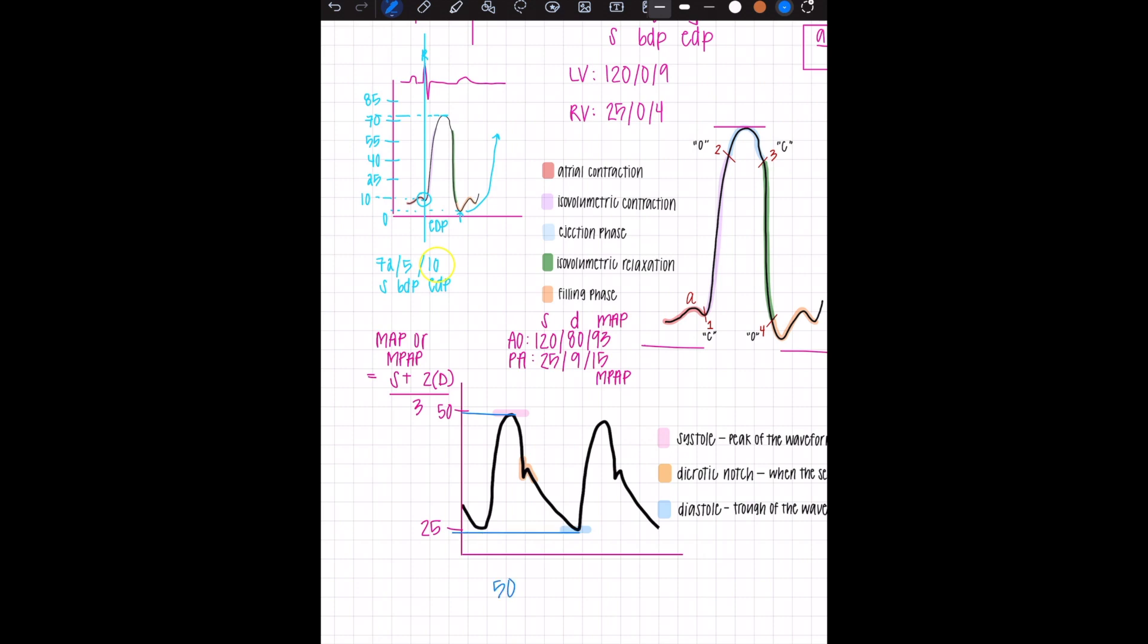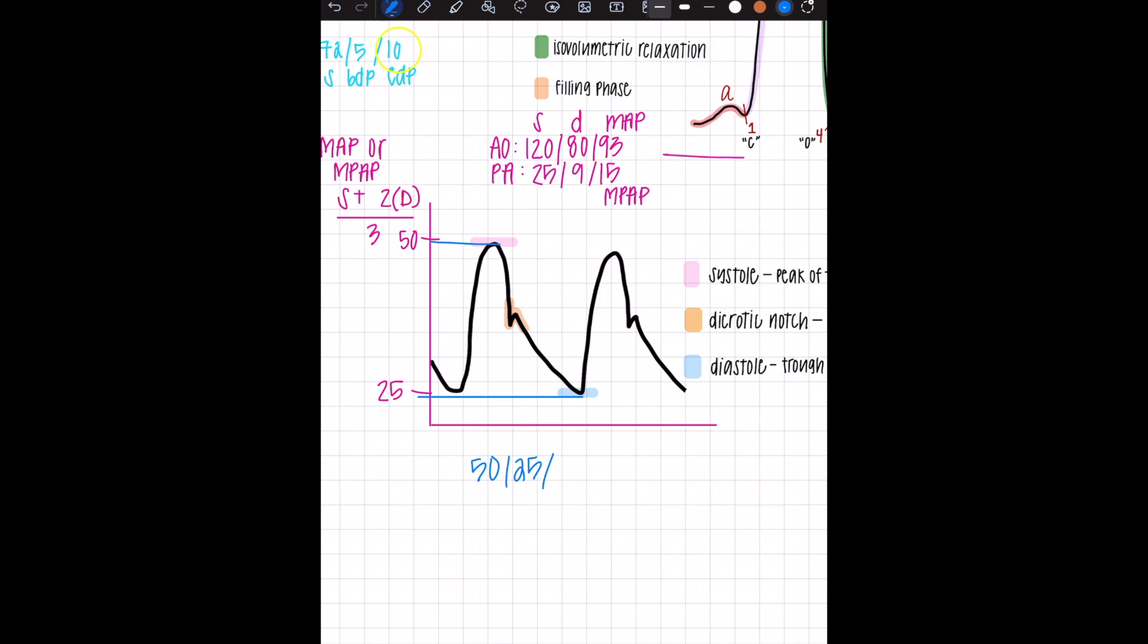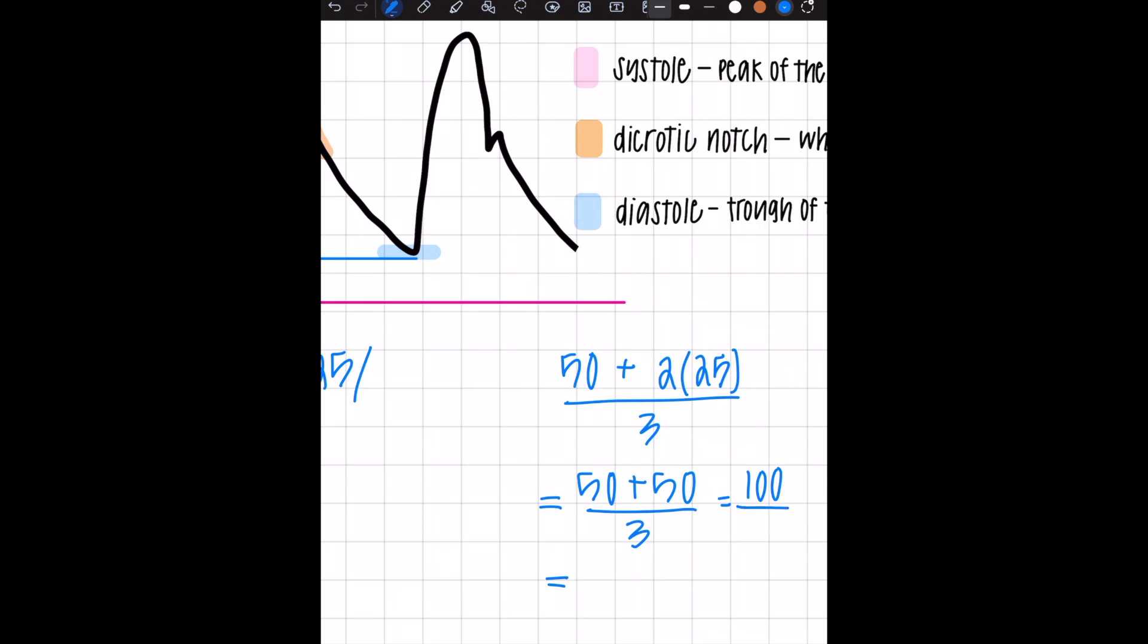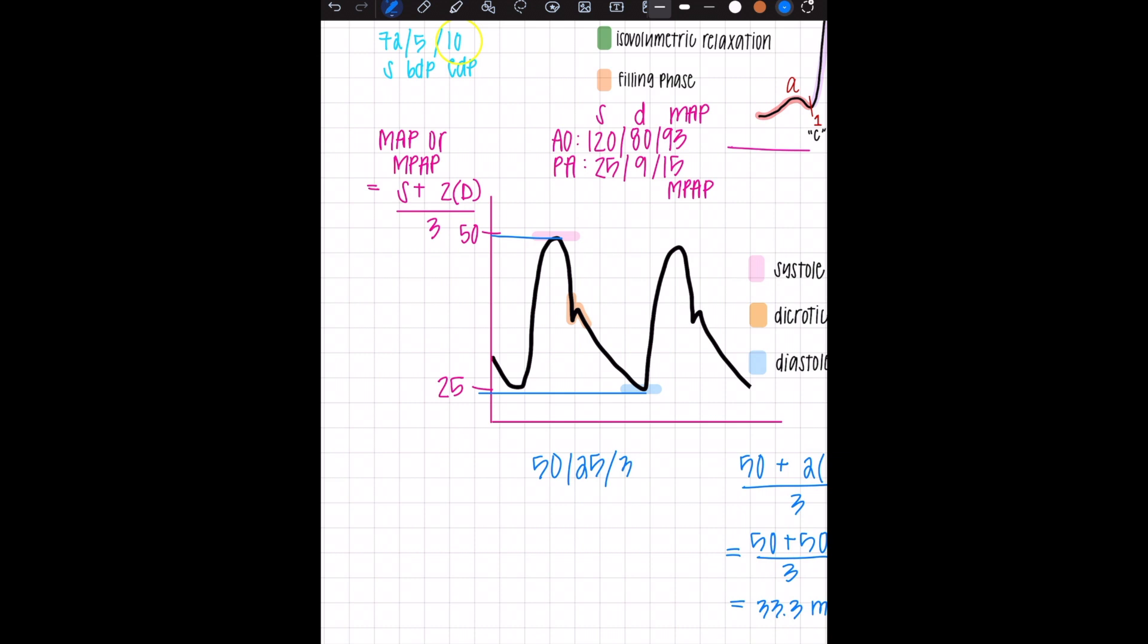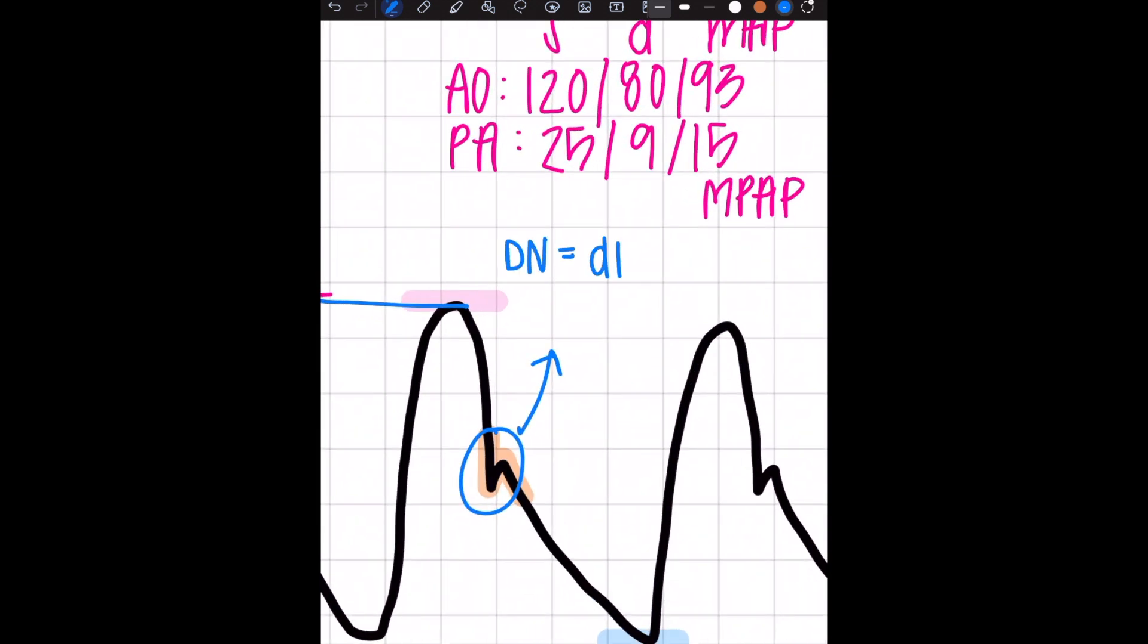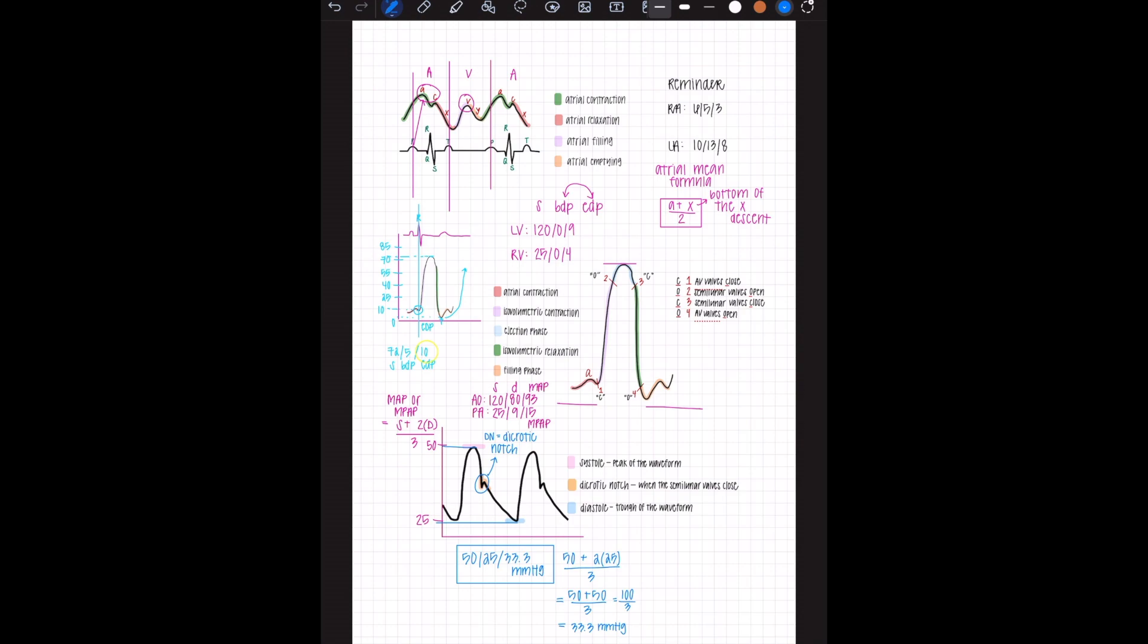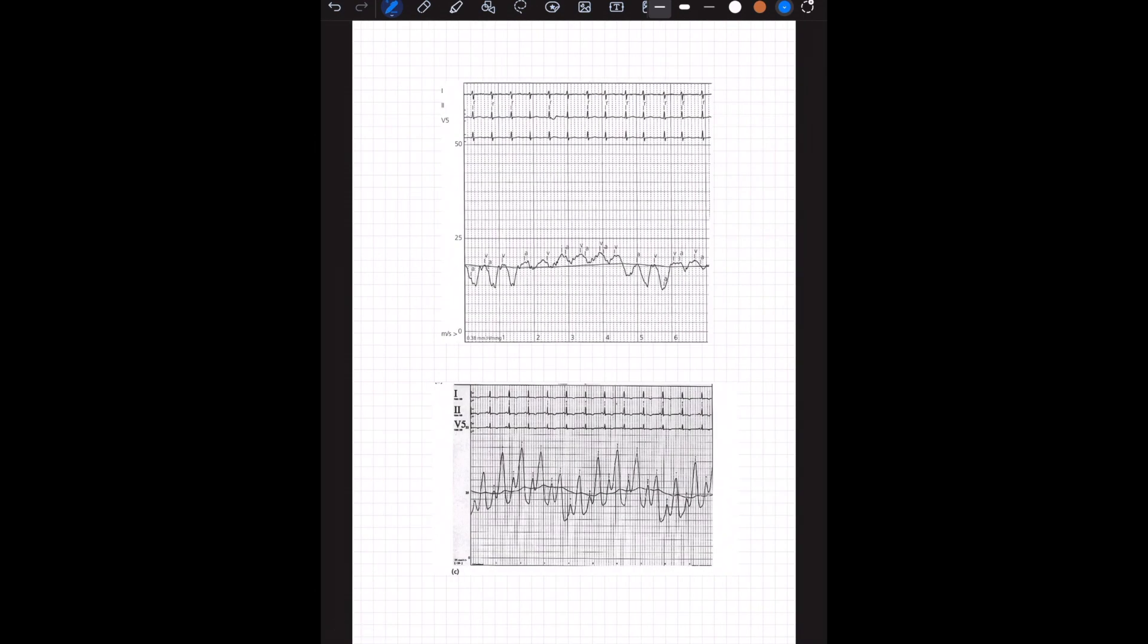The systolic pressure is at the top, that's about 50. Diastolic pressure is at the bottom, that's about 25. So 50 plus two times 25 over three is 50 plus 50 over three, which is 100 divided by three, which is about 33.3 millimeters of mercury. So that would be the mean pressure at the end. A final note here is where the dicrotic notch is because that's a popular boards question. This little notch here is the dicrotic notch and that's where the semilunar valves close.